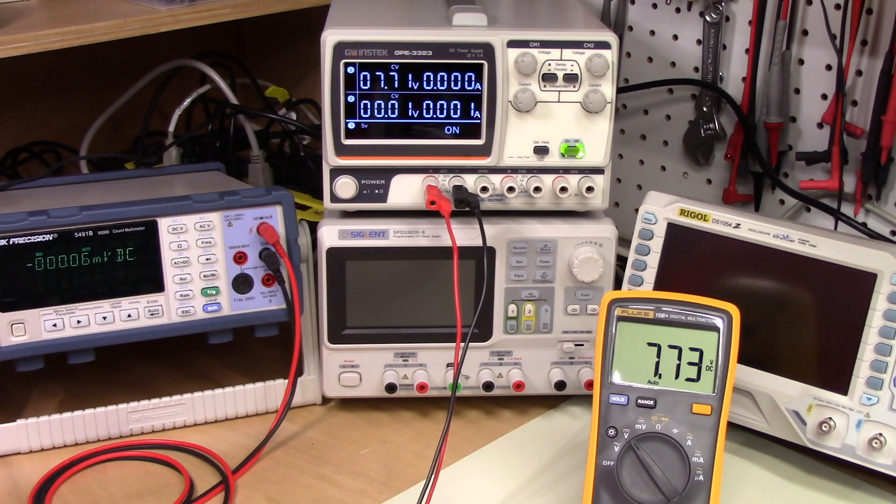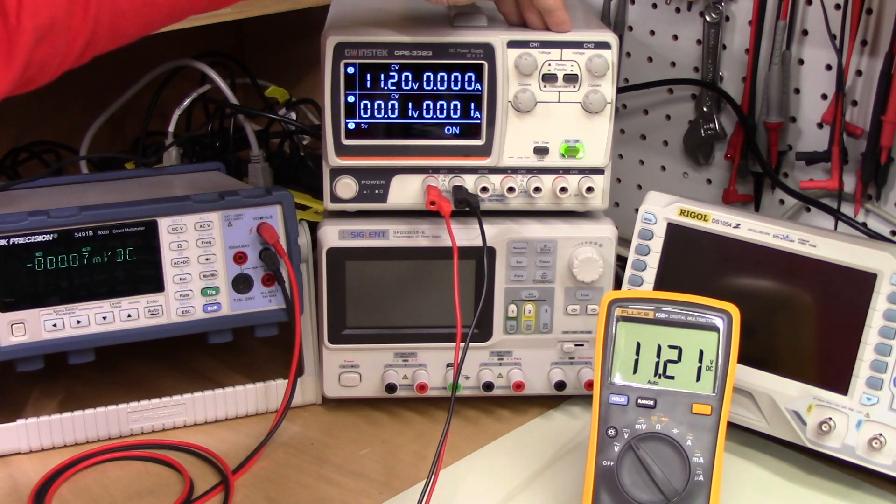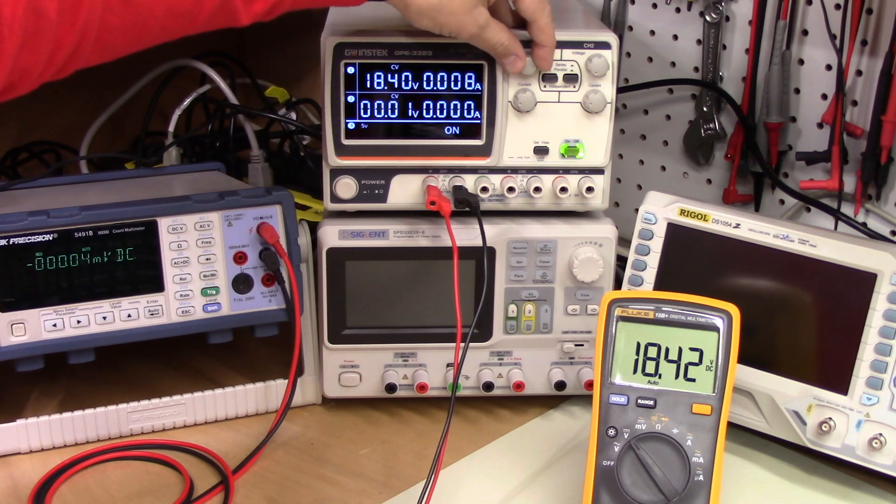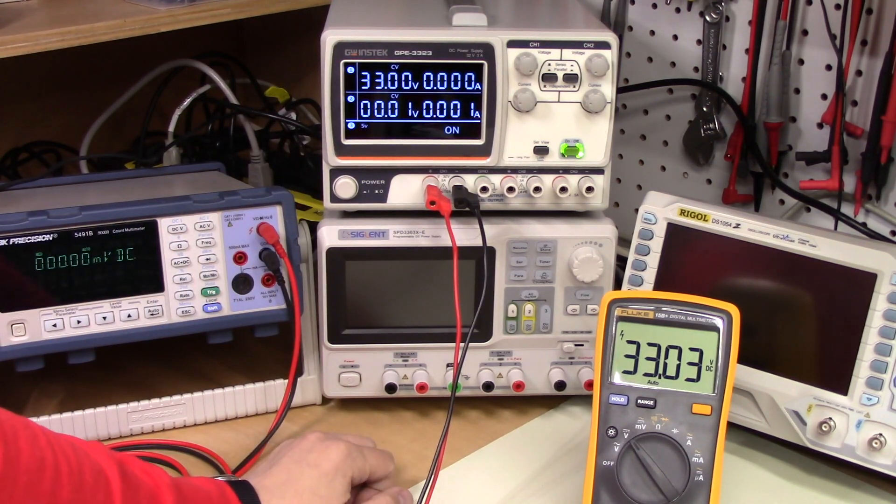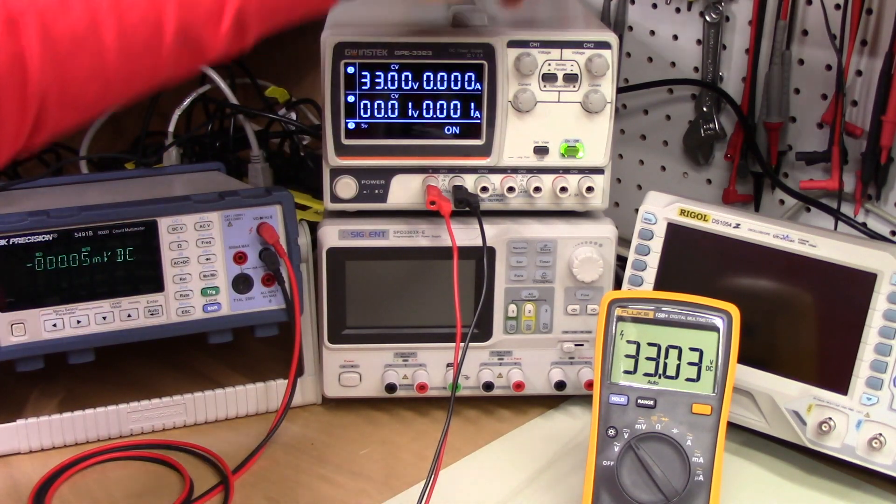So I do in fact believe that this is calibrated nicely at the factory. So again we get 7.71, 7.2 versus 7.73. 11.2 and 11.2. 18.39 versus a little over 18.4. And so on. So this will go up to 33 volts and we see the same thing. So that's nice.